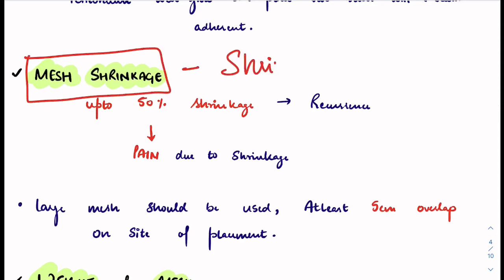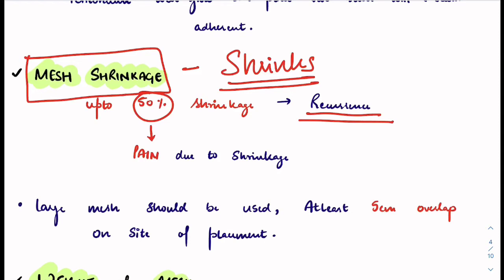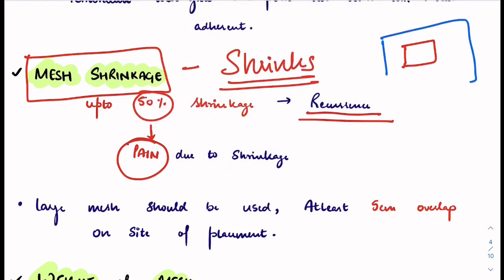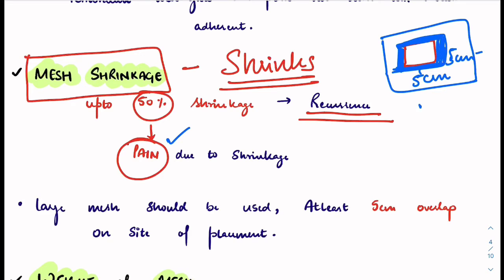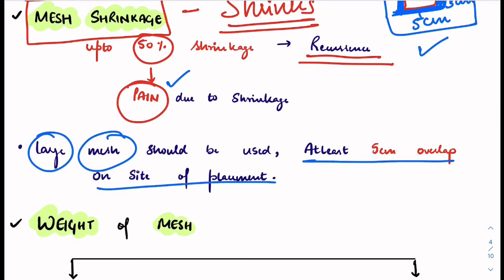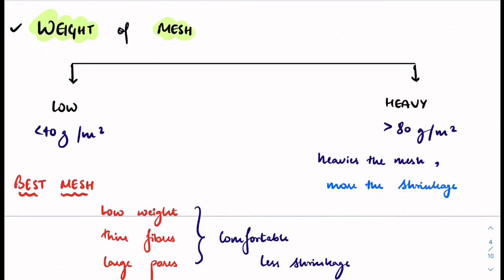An important characteristic of mesh is that it shrinks — up to 50%. Shrinkage can cause recurrence, and mesh shrinkage also causes pain. To compensate, if a defect is small, you must use a mesh that is larger — at least five centimeters of overlap — so that even after shrinkage the mesh still completely covers the defect.